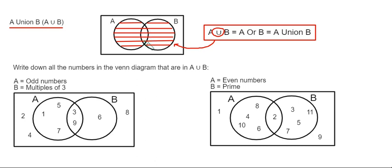So notice that you include the numbers in the center of the Venn diagram as well, where the two sets overlap. So let's have a look at the two examples here then.